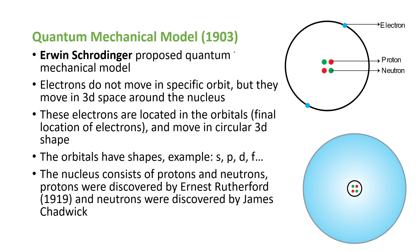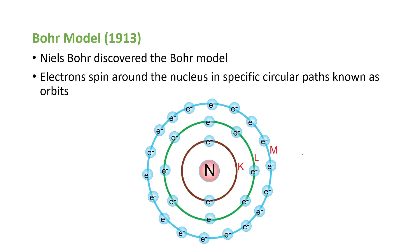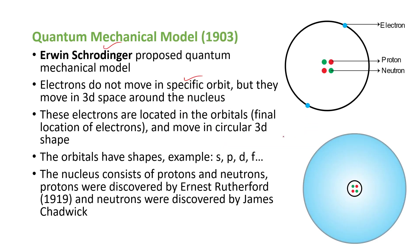The next model is the quantum mechanical model, proposed by Erwin Schrödinger. He said that electrons do not move in specific orbits, but rather move in 3D space around the nucleus. This 3D region is known as the electron cloud. The electron can move in any direction, and depending on the movement of the electrons, we get different shapes of orbitals — such as dumbbell shape or circular, which will be discussed in coming lessons.